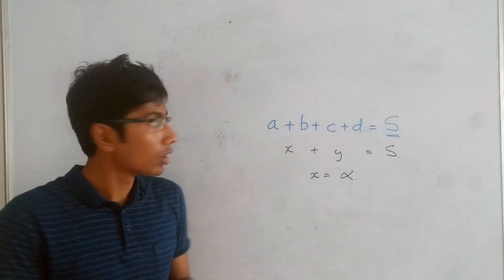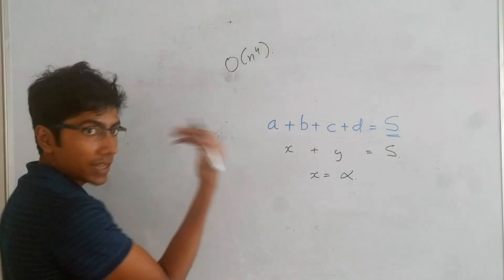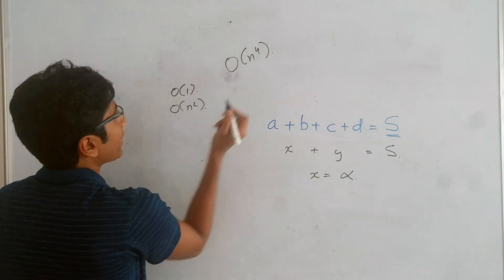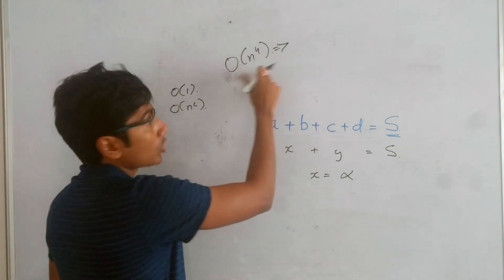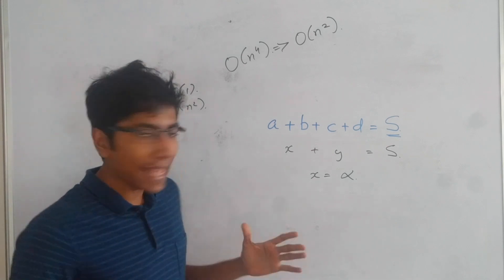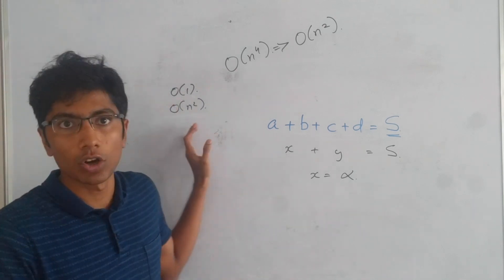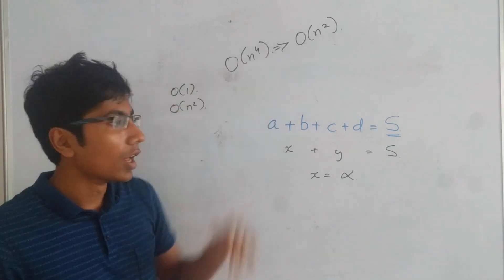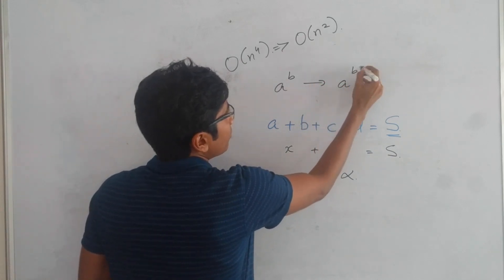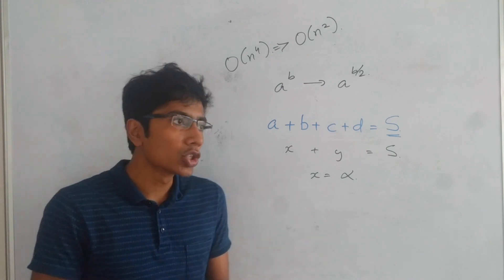What you see is that from N raised to power 4 — the original complexity — we have moved to finding X equal to alpha, which is comparing two sets, finding the intersection of two sets. Each element takes order one time, and the number of elements in set X is order N squared. So multiplying these two, we get: from N raised to power 4, we have changed the complexity to N raised to power 2.